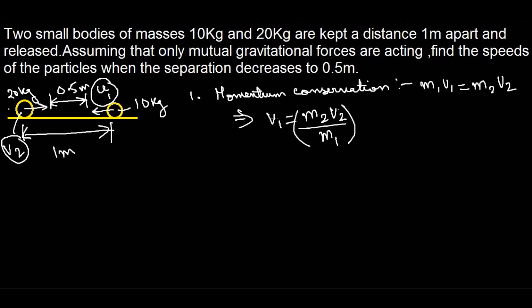So here we have got a relation between V1 and V2. M2 by M1, where M1 is 10 kg and M2 is 20 kg, so M2 by M1 is nothing but 2. Therefore V1 equals 2 times V2. Let me name this as equation 1.